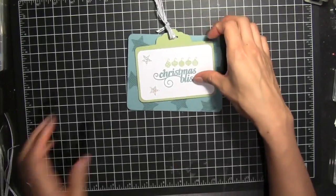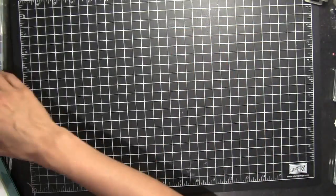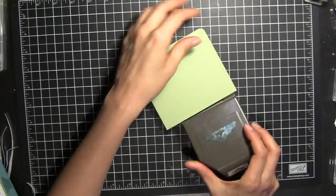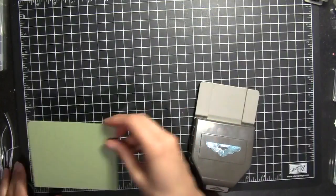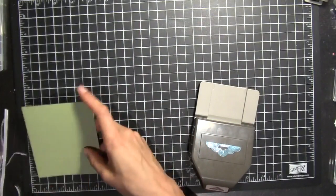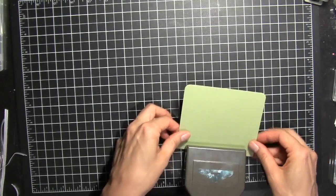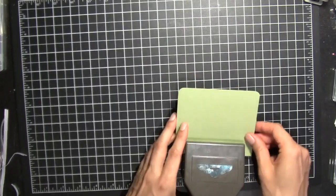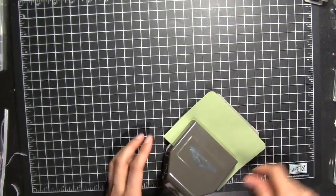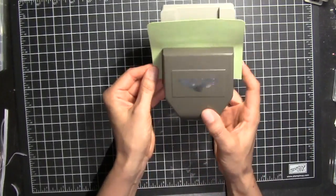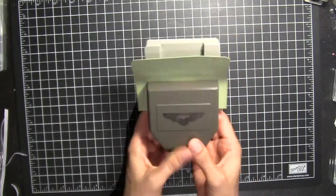I'm going to start by using the Scallop Tag Topper Punch. I'm going to go ahead and place my 4.5 by 4 inch piece of Pear Pizzazz cardstock. I'm just going to scoot that all the way in to the top. Make sure that that's even, equidistant on both sides. I'm just going to punch.